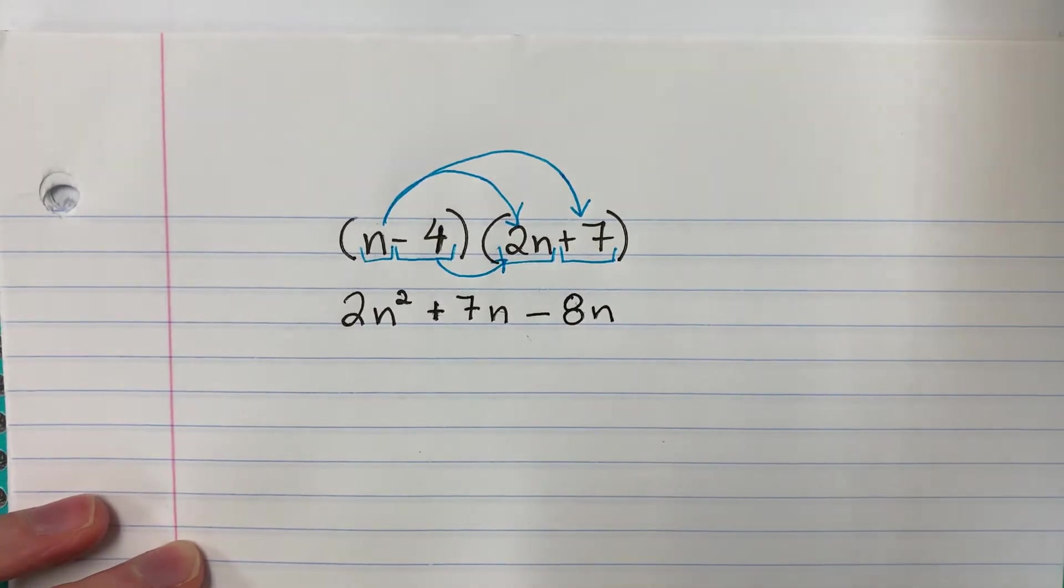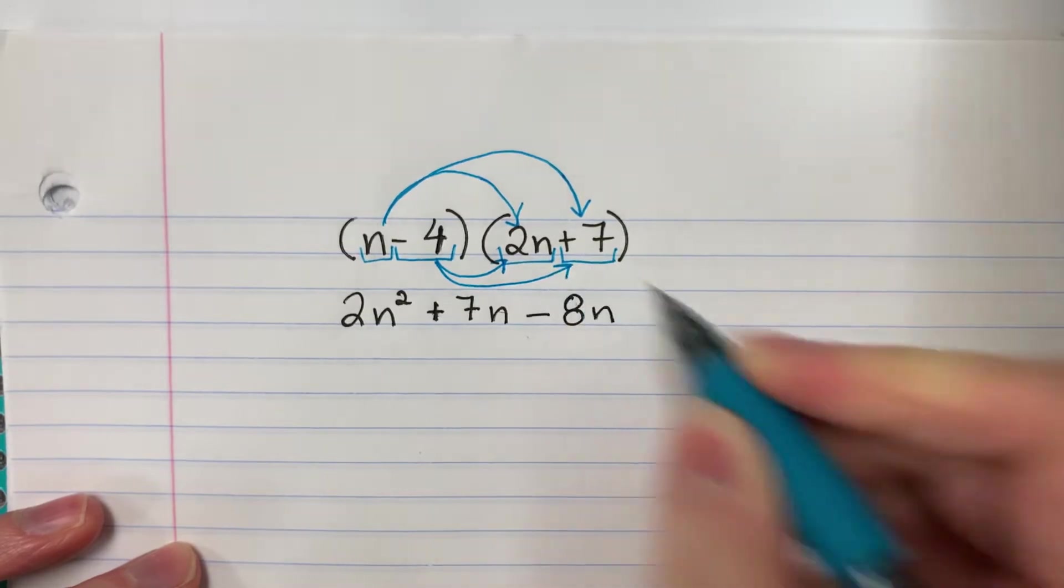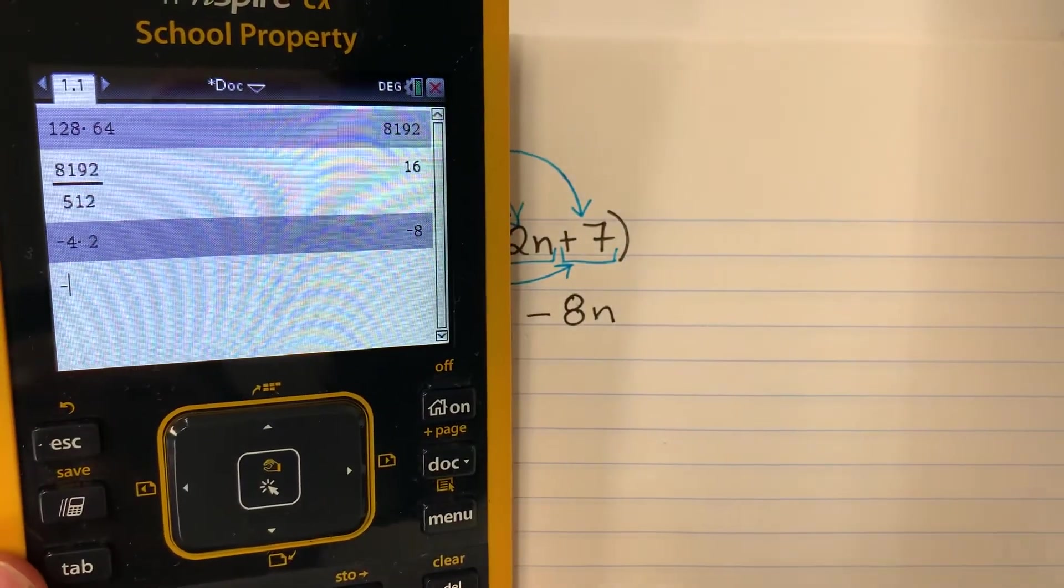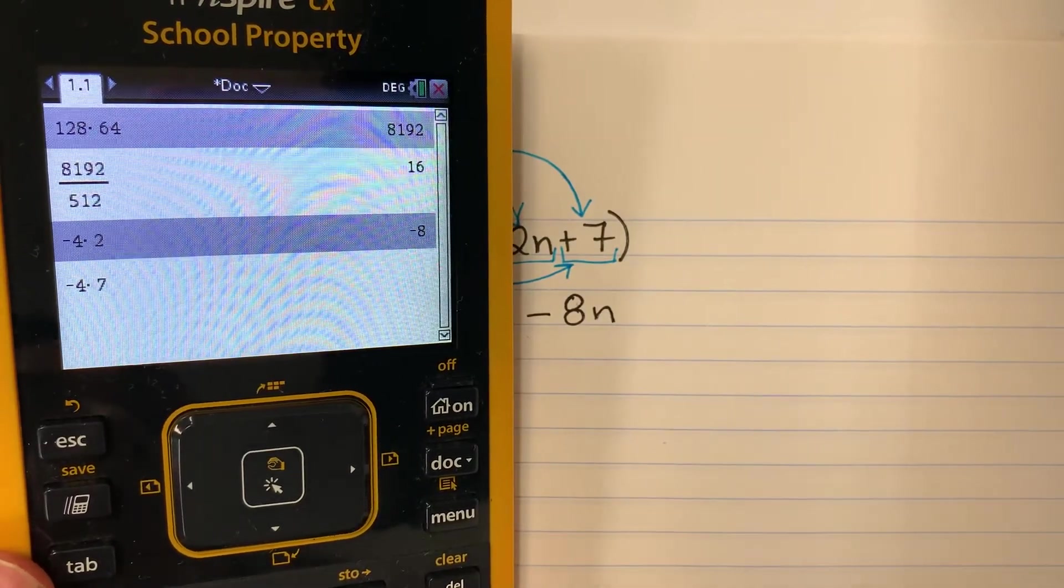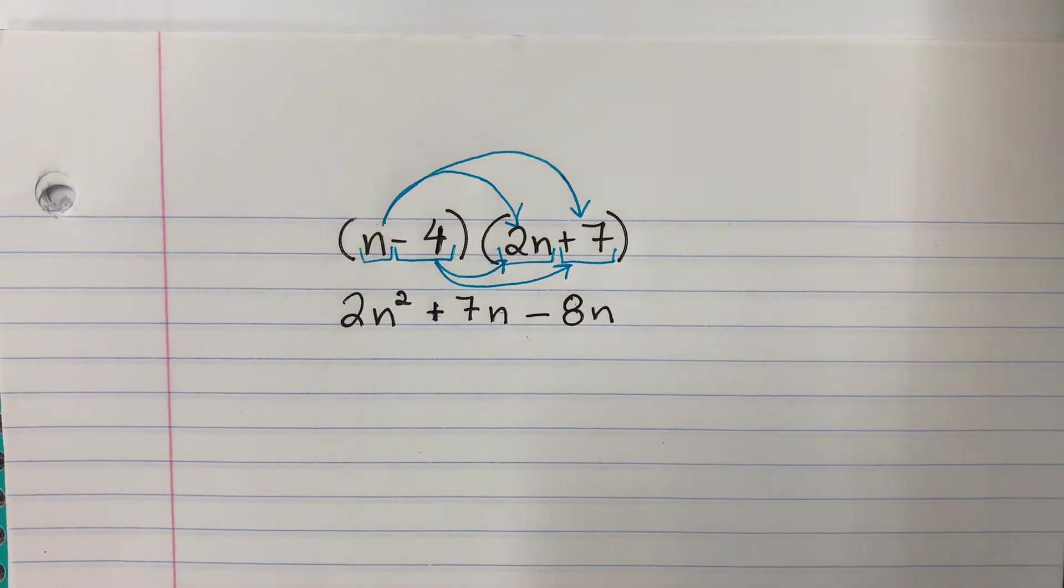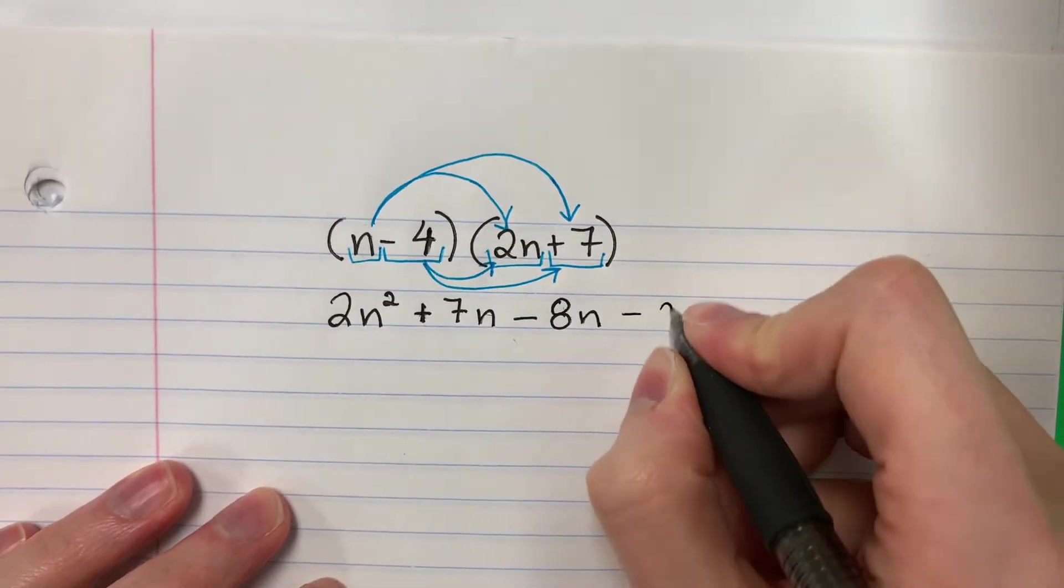And the last one, la última. Again, negative 4, otra vez. Negativo 4 times 7 por 7. So negative 4 times 7, that is negative 28. Negative 28.